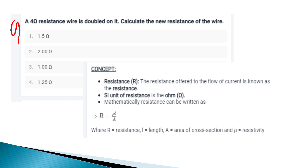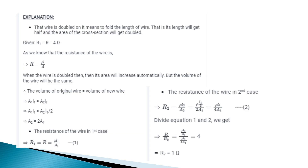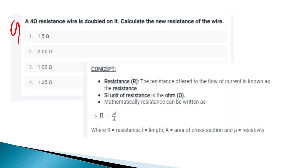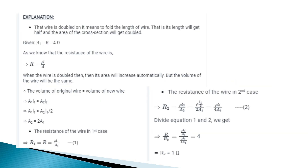The question: a 4-ohm resistance wire is doubled over (folded). What is the new resistance? When a wire is doubled over, its length becomes half and the cross-sectional area becomes double — because volume is conserved. Using R = ρL/A: wire doubled means length is halved and area is doubled.